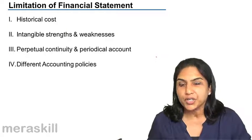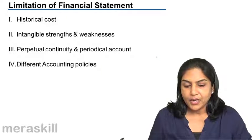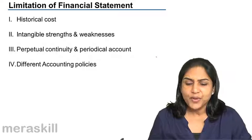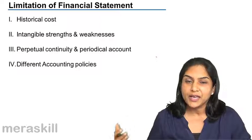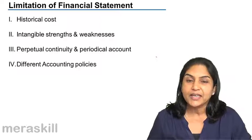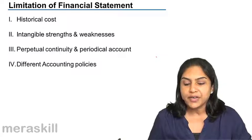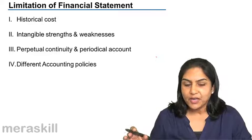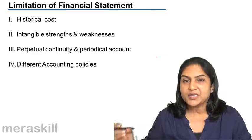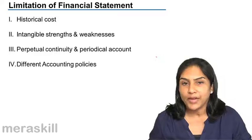In the balance sheet, the land would continue to be shown at 1 lakh. That is why sometimes there is revaluation of assets, by which we increase the value of these assets and create a reserve called a revaluation reserve. However, the reason that we maintain historical cost is that it is objective — it is not a matter of opinion, it is the actual price for which we acquire the asset.